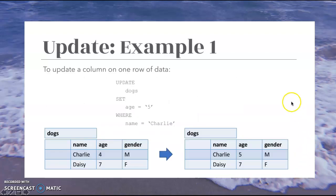So our example here, we can see in order to update a column on one row of data, you specify update dogs, again that's the table name, and then set age to five where name equals Charlie. So we're going to change the age here where the name equals Charlie. So here it was four, and it's changed to five. And it didn't change it on our other rows of data because we specified only where the name equals Charlie.